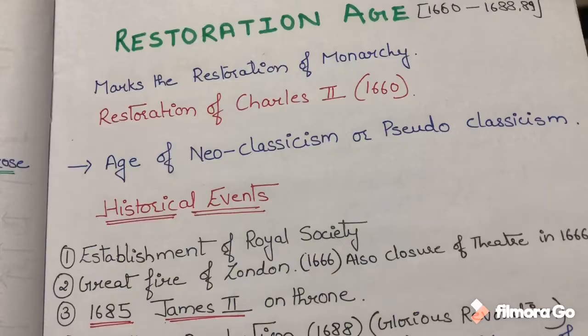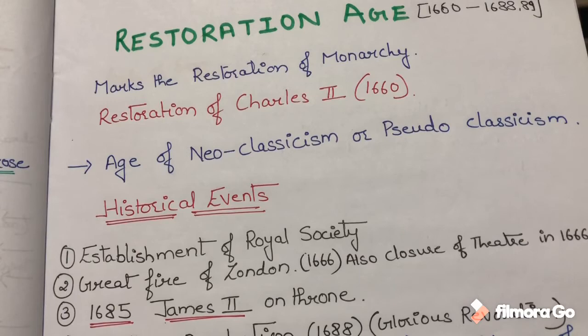These were the literary characteristics of the Restoration Age. In the next lecture, we will discuss the Neoclassical period. If you liked the video, please subscribe to my channel Easy English Literature and hit the bell icon. Till then, all the best — keep learning. Bye-bye.